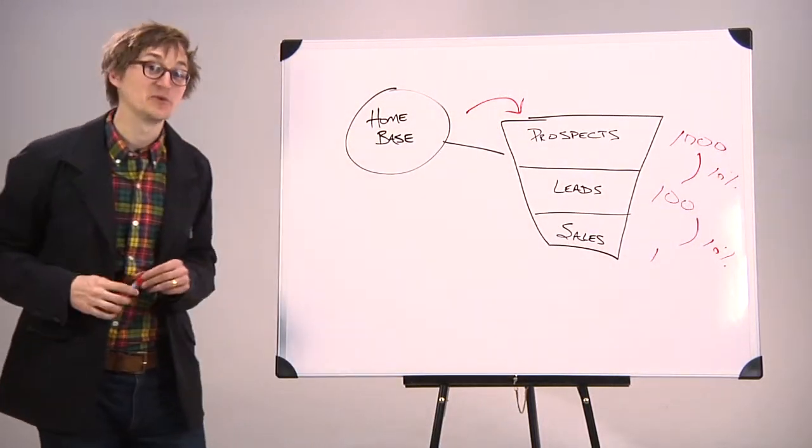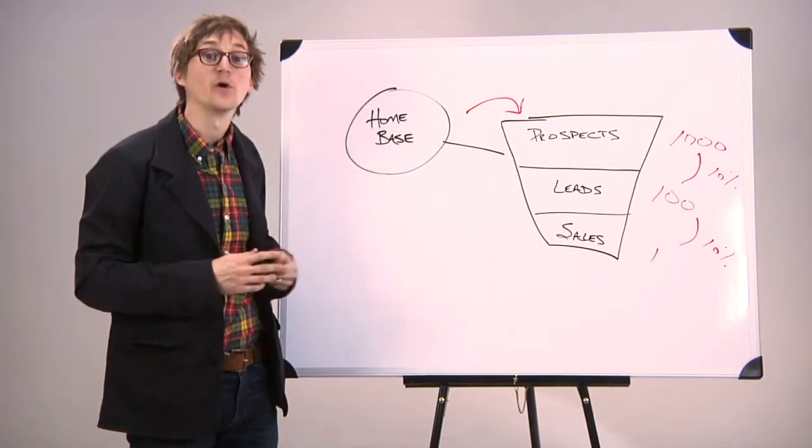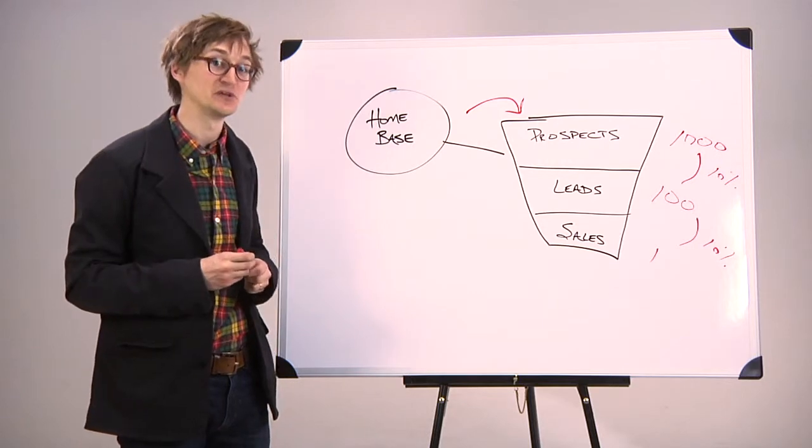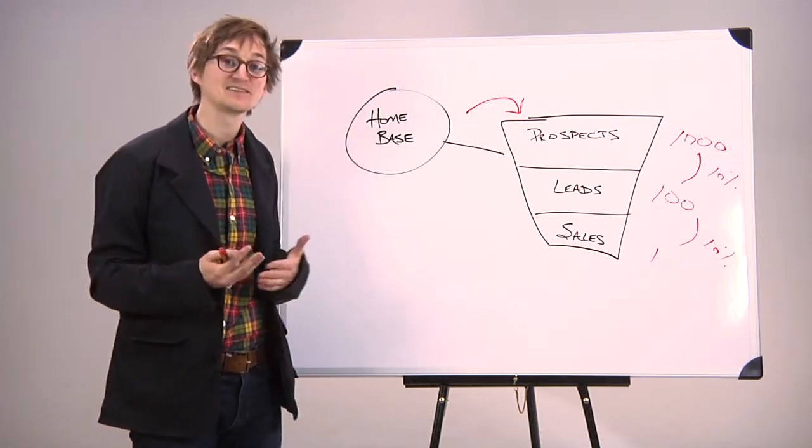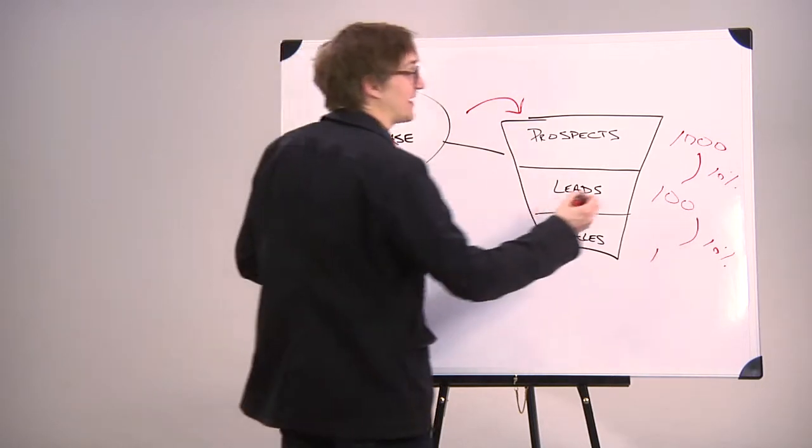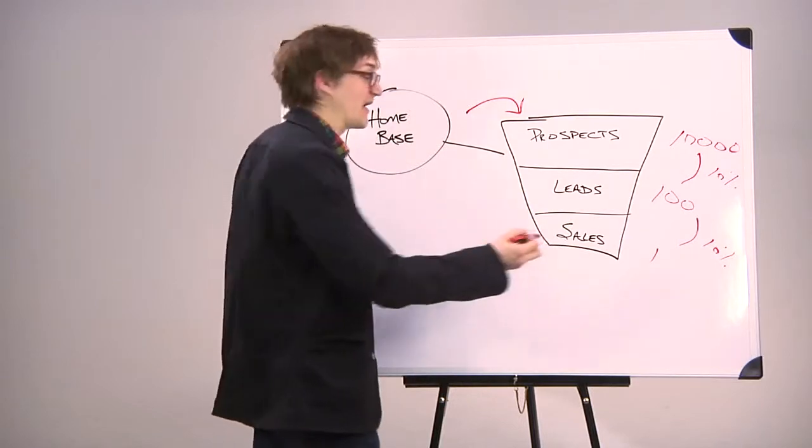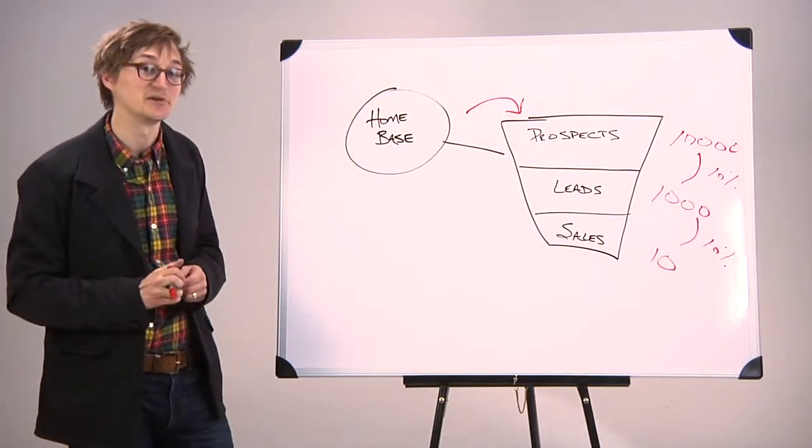Now there's two ways that we can increase sales on this website. We can either throw more people in the top or we can increase the conversion between each step. So if we're not doing much on social media or email or ads, the easiest step might be to increase that number on top. Maybe instead of a thousand, it becomes 10,000. Then you can see that we now have a thousand leads and 10 sales. That's not bad. We increase 10x number of sales.